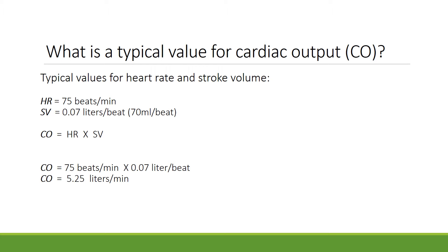If we plug those into the formula — cardiac output equals heart rate times stroke volume — cardiac output equals 75 beats a minute times 0.07 liters per beat. Cardiac output would then be equivalent to 5.25 liters per minute.